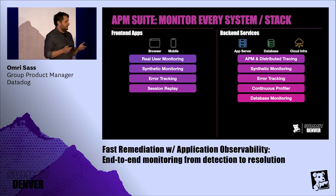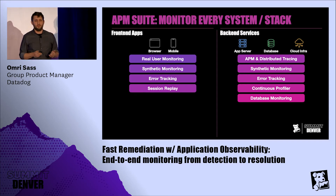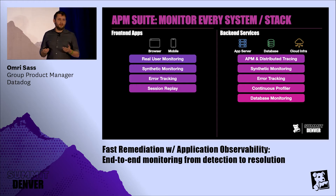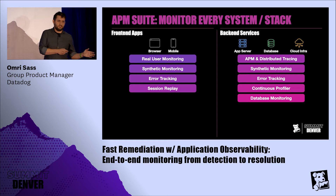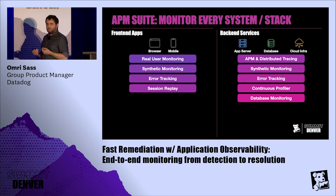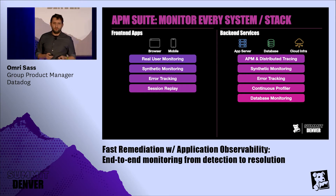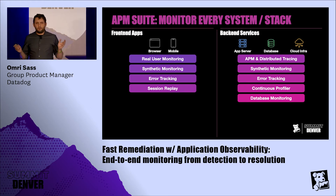Then we have session replay, which gives us a pixel-perfect recapture of user behaviors on our websites. That means we can save a whole lot of back-and-forth time between support teams and users. It also reduces friction because users no longer need to report reproduction steps — they can just give a complaint, we find their session, replay it, and figure out exactly what's going on. And then on the back end, we have continuous profiler and database monitoring, geared at helping you figure out very granular root causes: what line of code is causing a performance degradation, or whether a shared database instance is crashing.